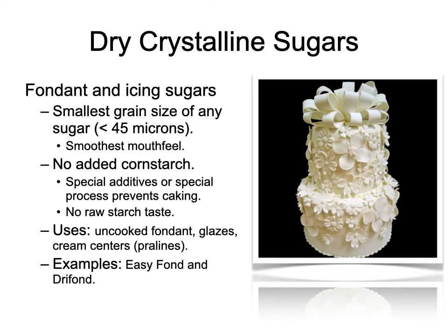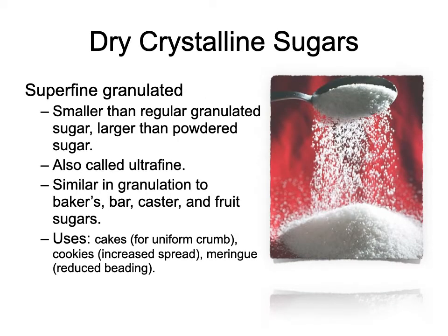Fondant and icing sugars are the smallest of any sugars, with particle sizes below 45 microns. The human mouth can generally feel objects larger than 25 microns, so below that threshold food feels smooth. Fondant and icing sugars have no added cornstarch, so you don't end up with a starchy taste. They're used to make fondant, sugar decorations, pastillage, and other products made with fine crystalline sugar.